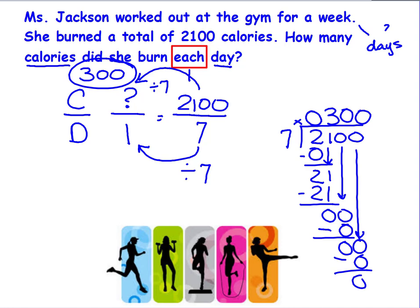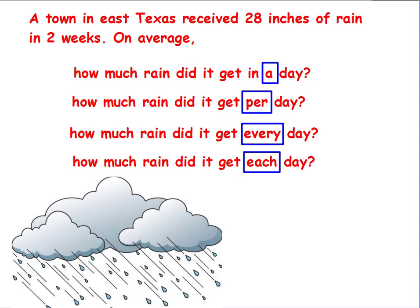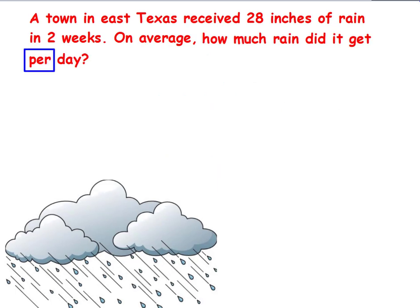Let's try this again. A town in East Texas received 28 inches of rain in two weeks. On average, how much rain did it get in a day? Or per day? Or every day? Or each day? Every one of these words means one. So we're trying to find the unit of rain it's getting per day. We're just going to choose one — I'll choose 'per' this time.